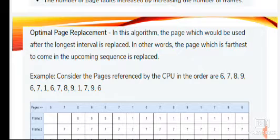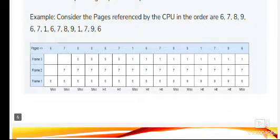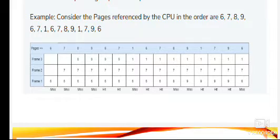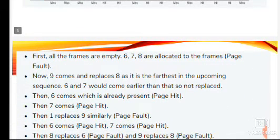The next algorithm is Optimal Page Replacement. In this algorithm, the page which would be used after the longest interval is replaced — in other words, the page which is farthest in the upcoming sequence is replaced. Consider the following example with 3 frames. First, value 6 is inserted into frame 1, 7 into frame 2, and 8 into frame 3. The next value is 6 — it is already available, so this is a page hit. The next one is 7 — it is also already in a frame, so this is a page hit. All frames 6, 7, 8 are initially allocated — those are page faults.